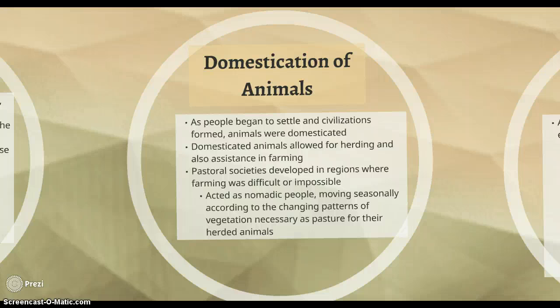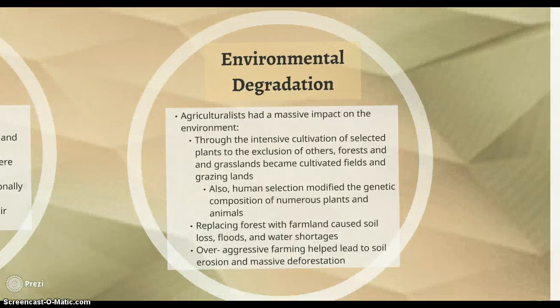Pastoralist societies developed where agriculture wasn't possible. This was usually in the Eastern Hemisphere because you had to have domestic animals, and those really didn't exist besides the llama in the Andes and over in South America. These were nomadic people who herded their animals around, following the pasture. Environmental degradation also resulted from the agricultural revolution — burning areas of land to cultivate fields, cutting down trees, causing deforestation, soil loss, floods, and water shortages. Over-aggressive farming could lead to soil erosion.